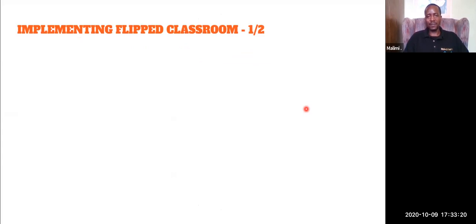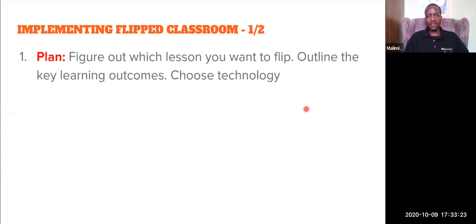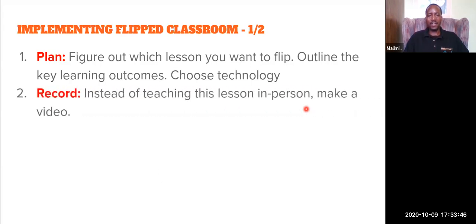Let us now see how we can implement Flipped Classroom. We have a number of steps. Step one: plan. In planning, you have to figure out which lesson you want to flip. Then you have to outline the key learning outcomes and also choose the technology you're going to use for this lesson. Step two: record. You have to record your presentation instead of doing it in person and send it to your students.